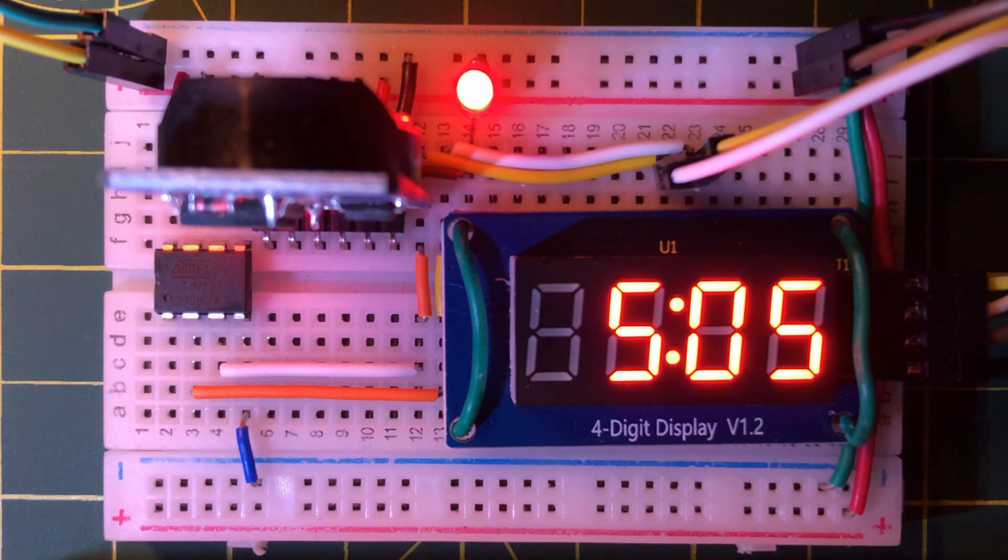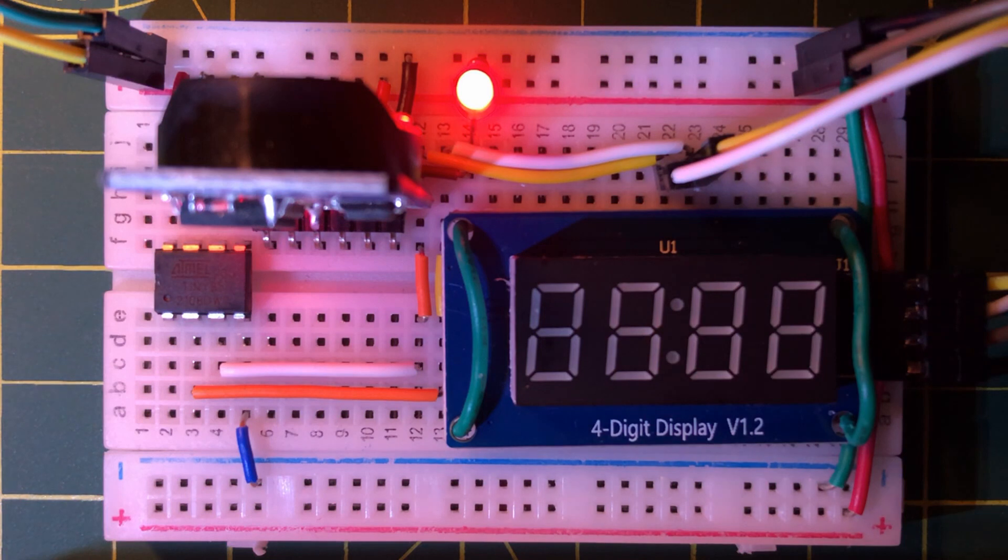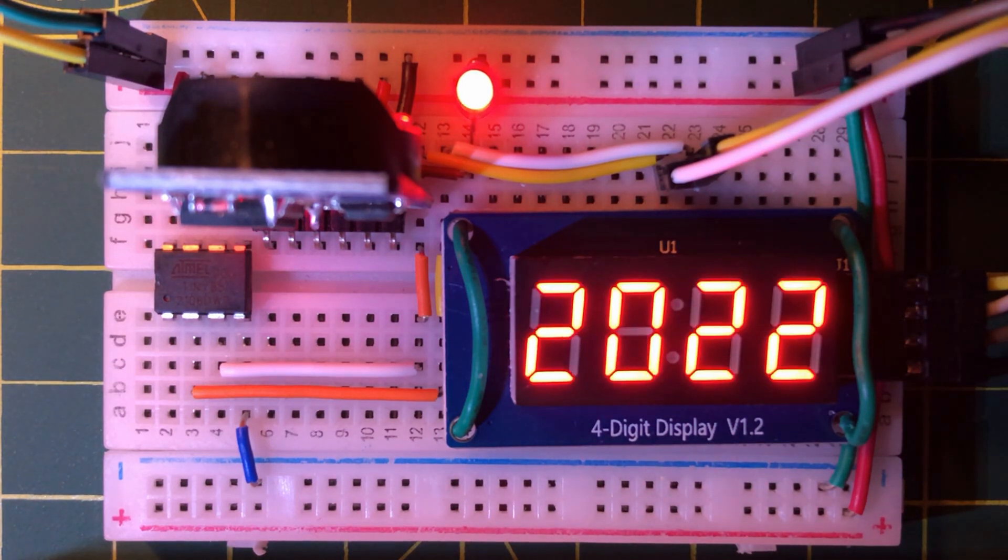The TM1637 displays time. The LED is on indicating PM. Date and temperature are displayed periodically every 30 seconds.